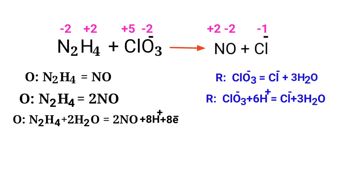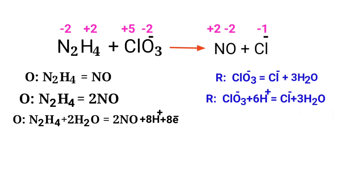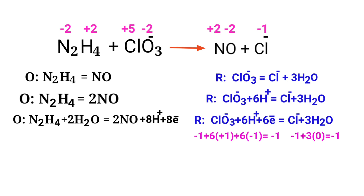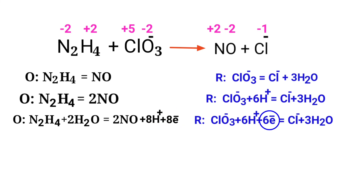Now balance the charges in the reduction half reaction as well. To make electron gain equivalent to electron loss: in the oxidation half reaction there are 8 electrons, but in the reduction half reaction there are 6 electrons. To equalize them, find the LCM — 24 electrons on both sides. Multiply the oxidation half reaction by a coefficient of 3 and the reduction half reaction by a coefficient of 4.